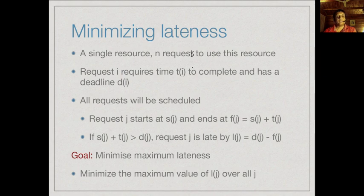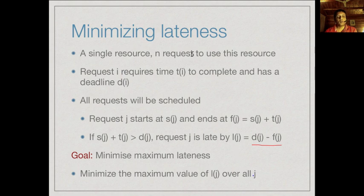It will end at f(j), the finish time of j, which is the start time plus the time it takes to process request j. Now if this finish time is bigger than the deadline, then it is late. The amount that it is late is the difference between the finish time and the deadline, and the goal is to find a schedule which minimizes the maximum lateness — we want to minimize the maximum value of l(j) over all jobs j.